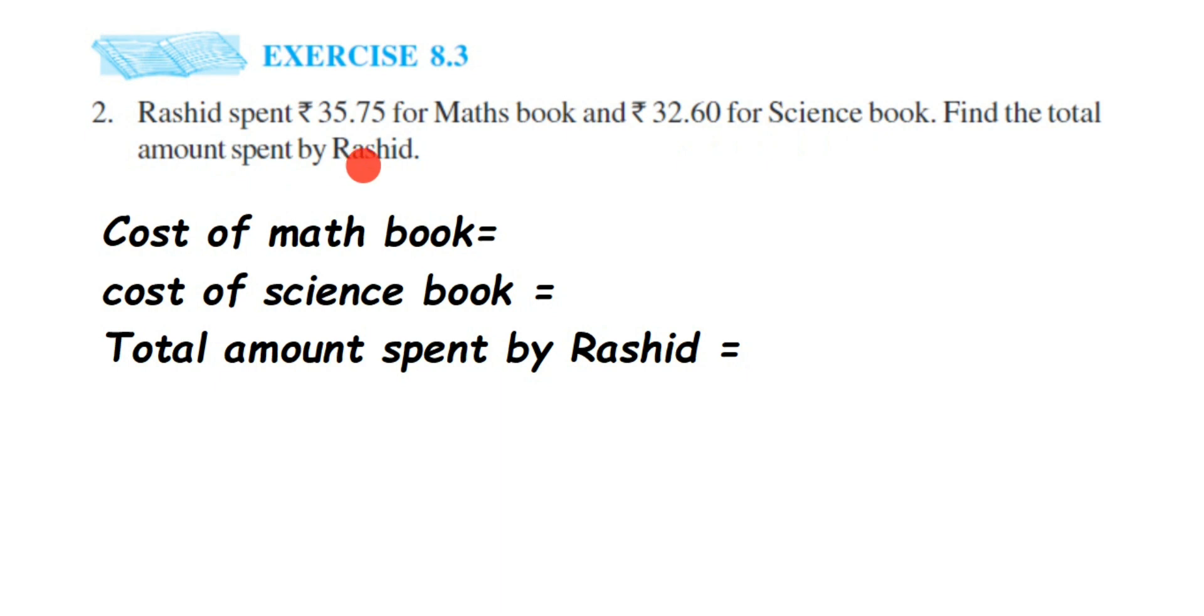He has spent the money on maths book and science book. We have to find out the total amount. So it's given in the question: for maths book he has spent 35.75, for science book he has spent 32.60.